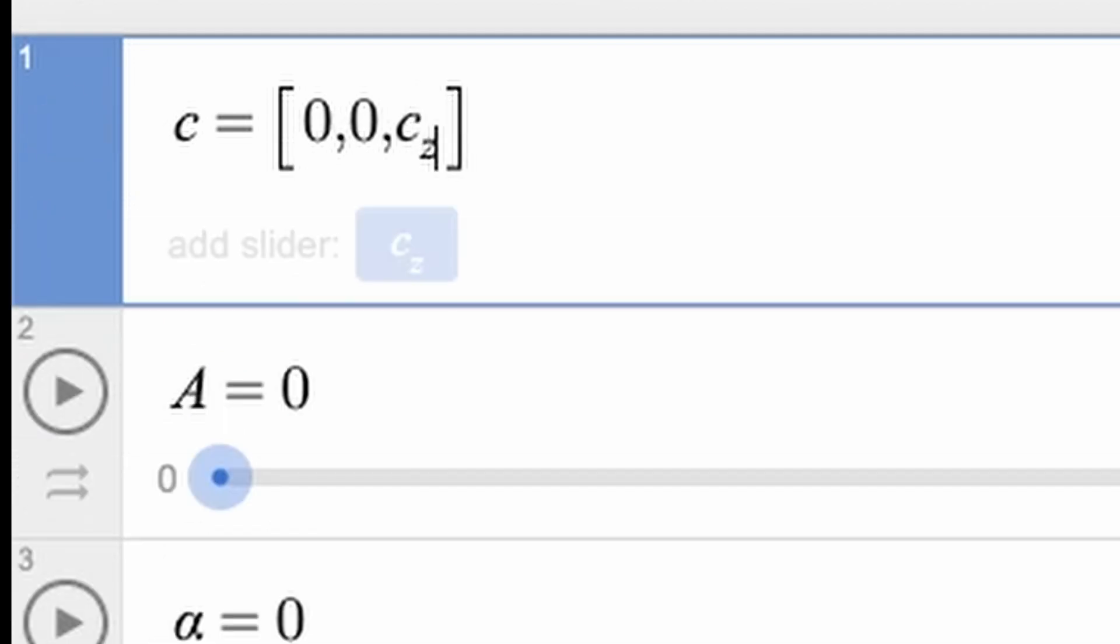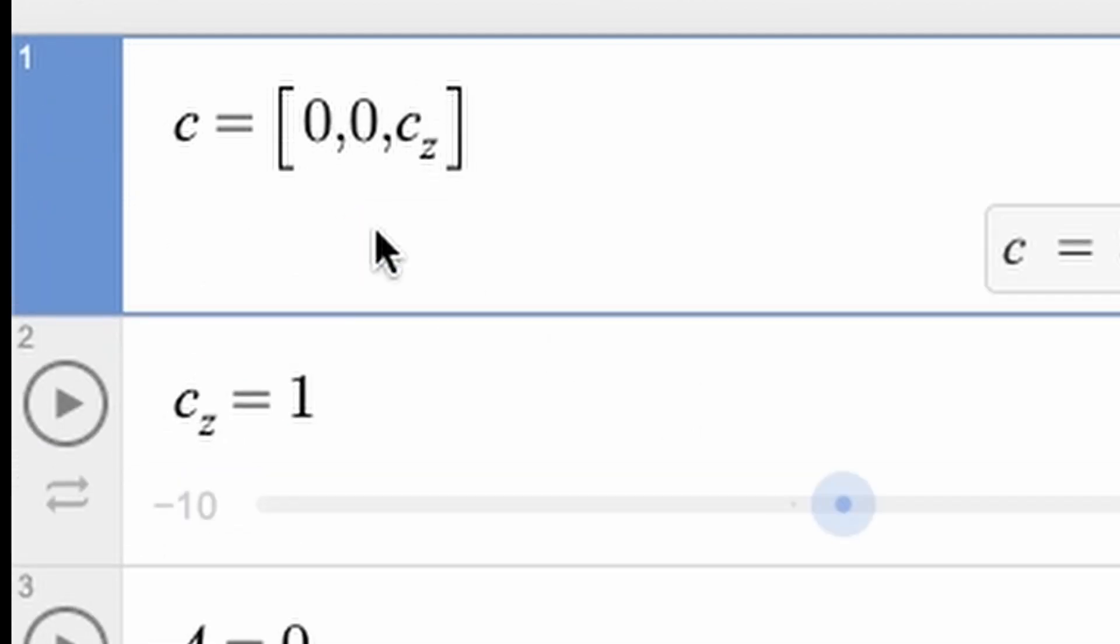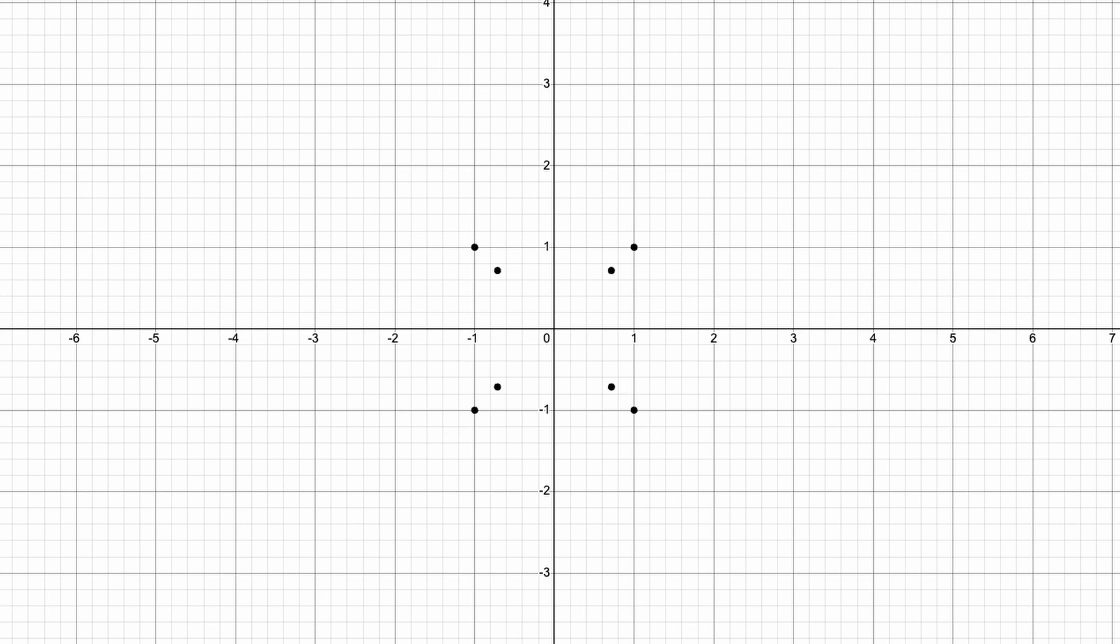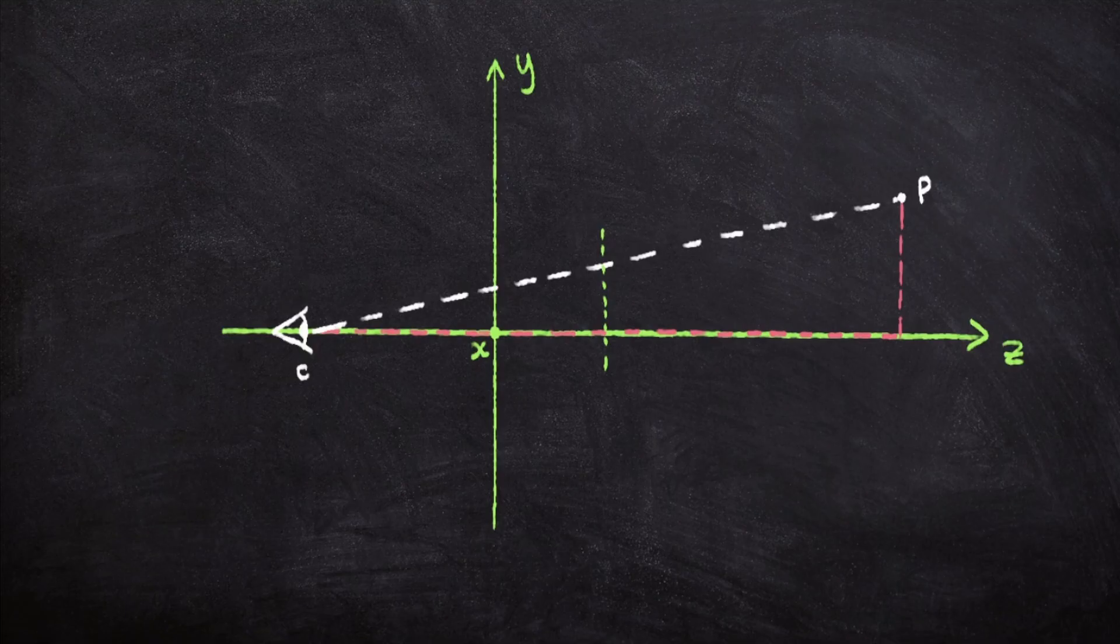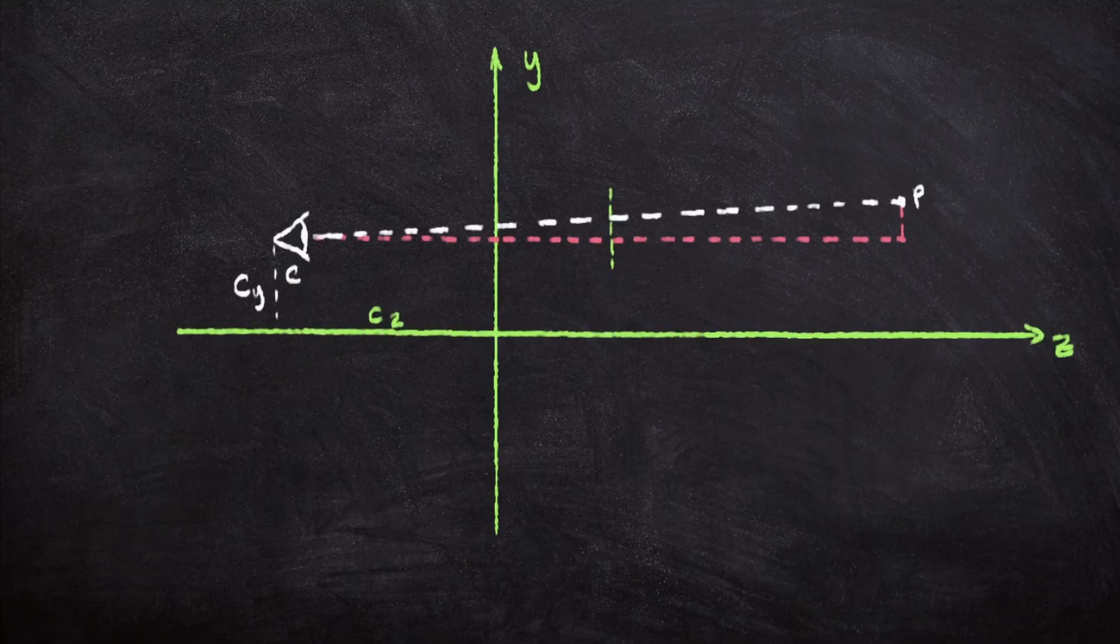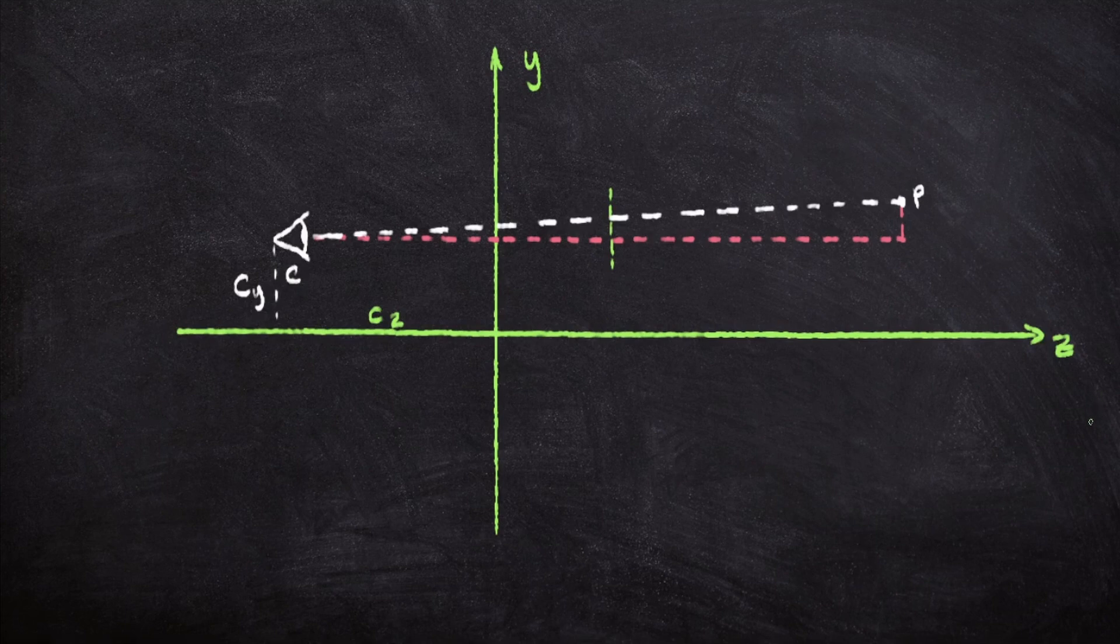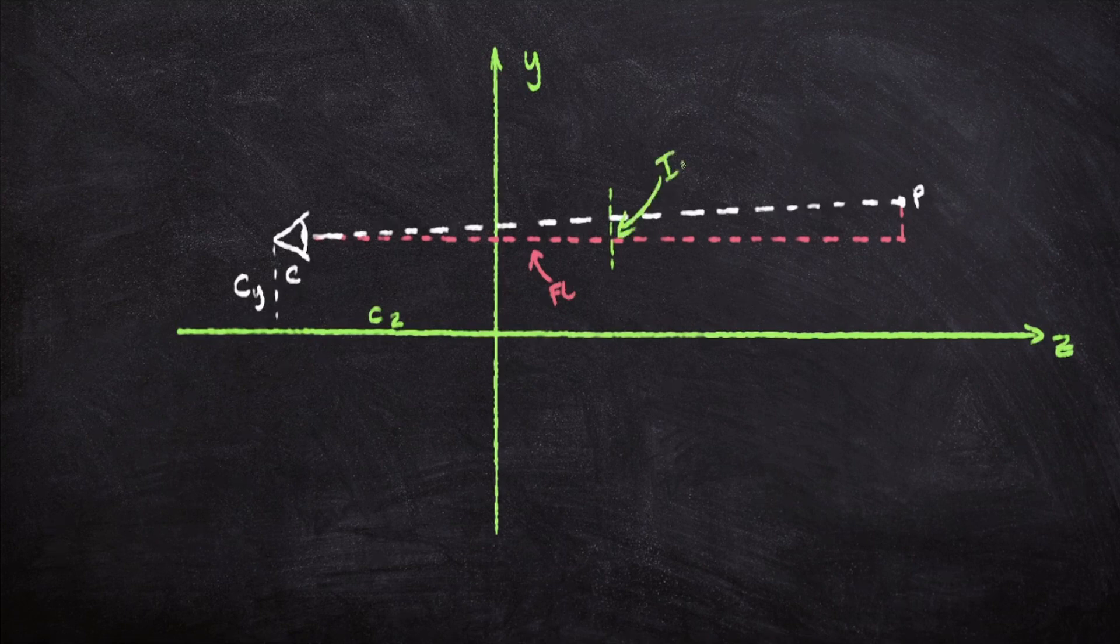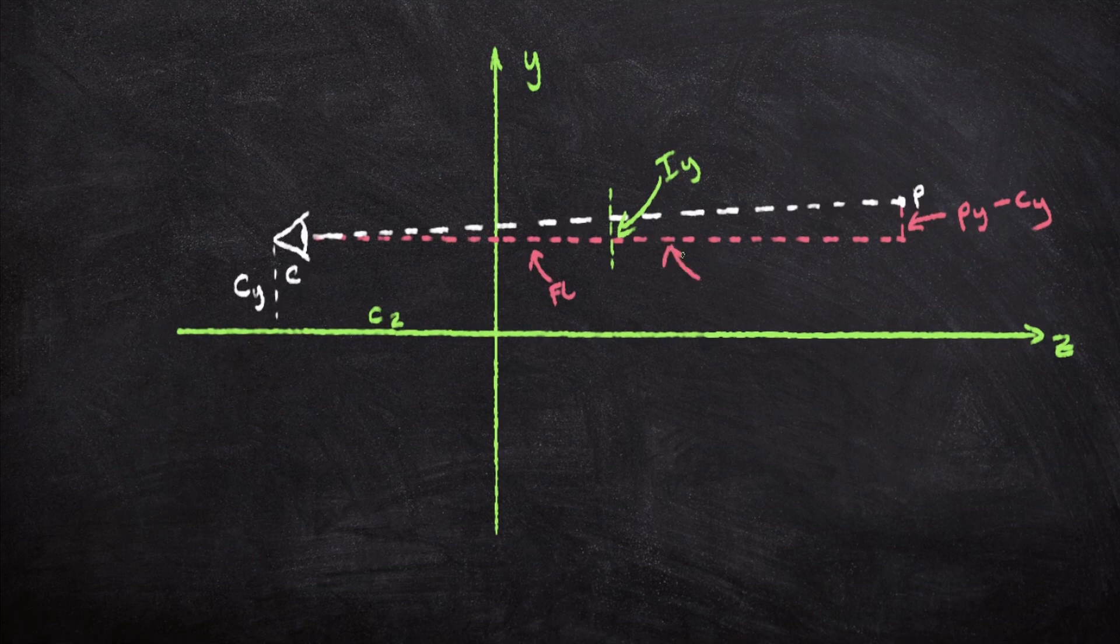We can move the camera, but only back and forth on the Z axis, if we change this CZ value here. But let's say we want to move it up and down. If we have a look at the original diagram, and elevate the camera by C sub Y, the dimensions of the right-angled triangles changes. This is still the focal length, and this is still I sub Y, but this now becomes PY minus CY, and this is still PZ minus CZ.